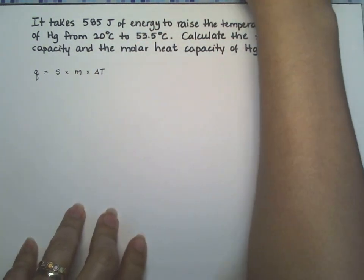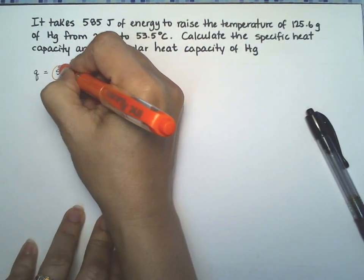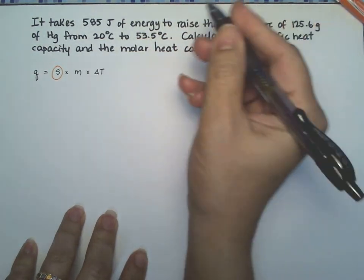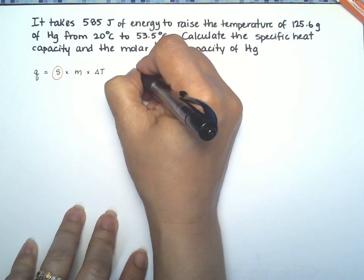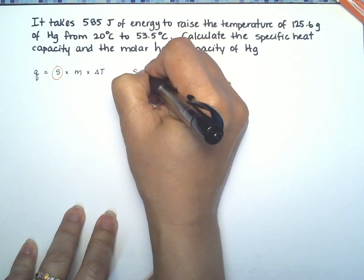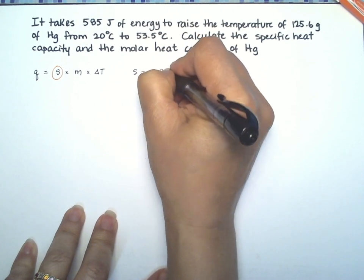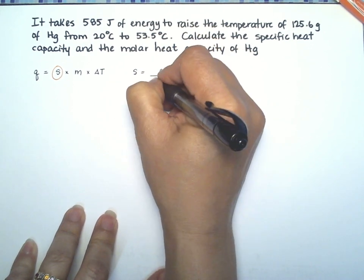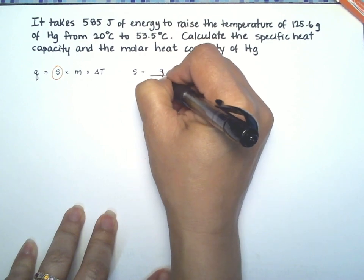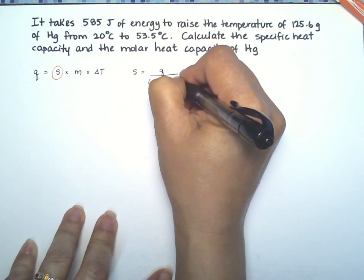But this time around, what we're going to do is solve for the specific heat capacity. So the specific heat capacity is going to equal the heat over the product of the mass and the change in temperature.